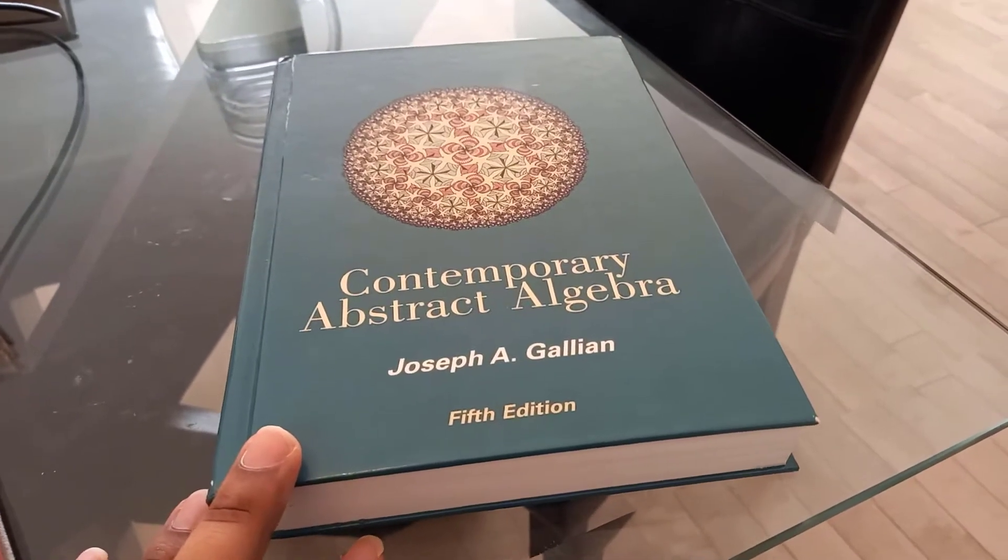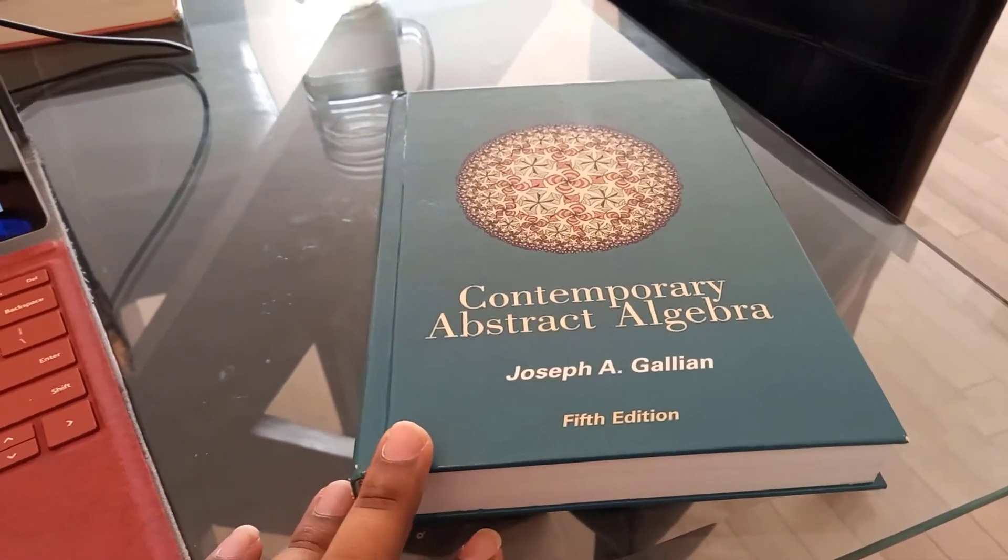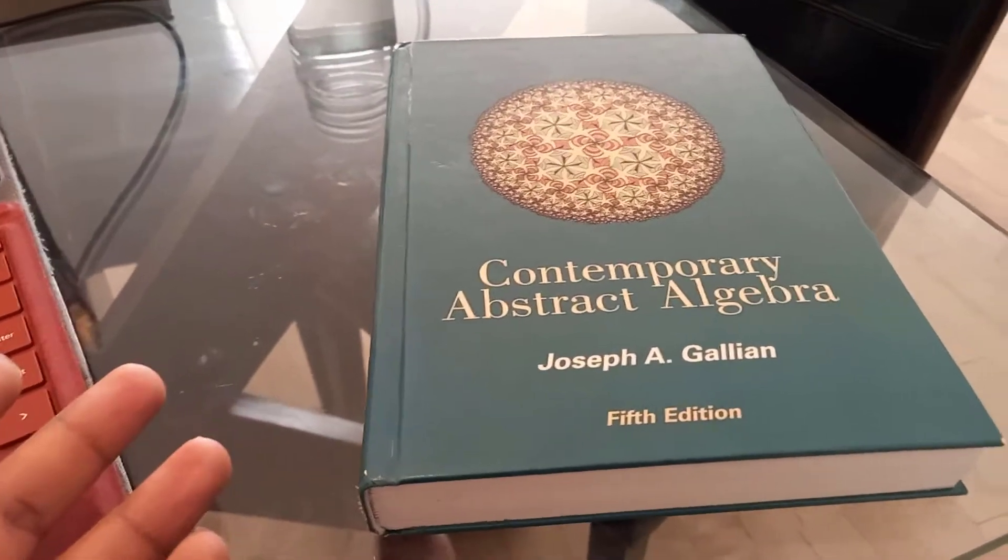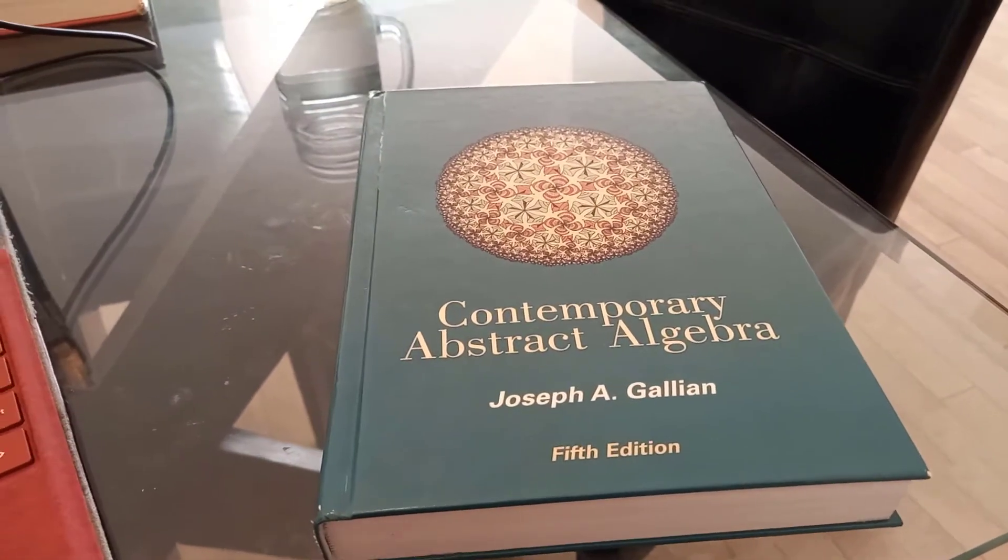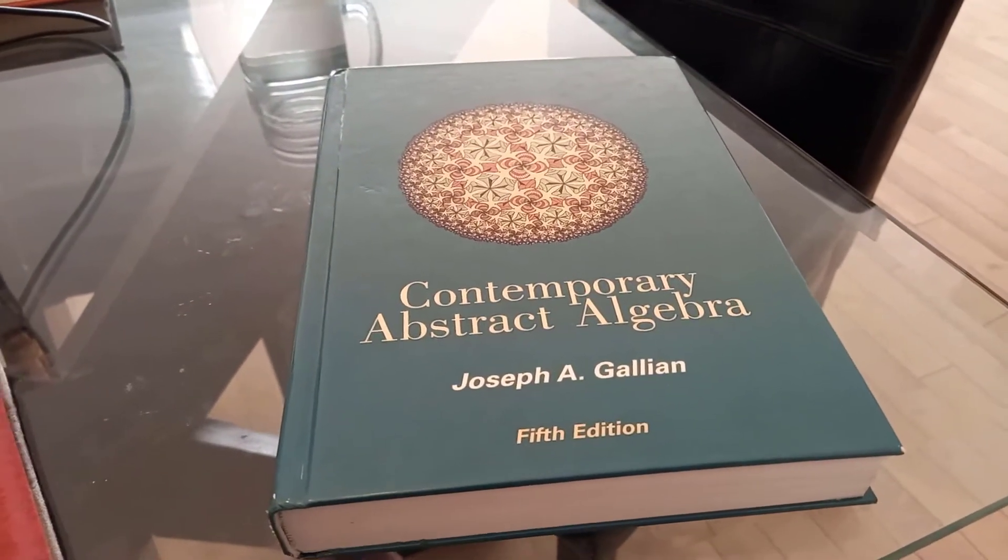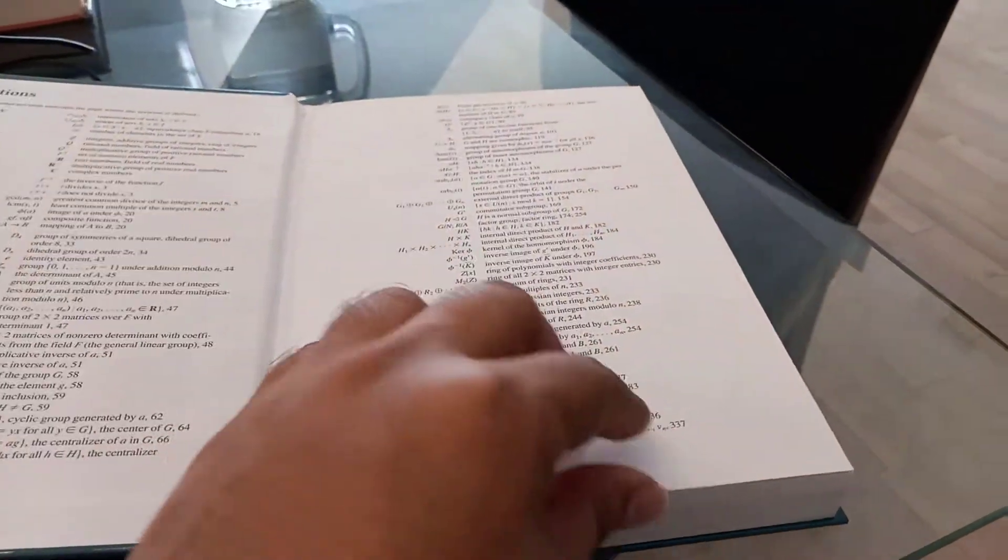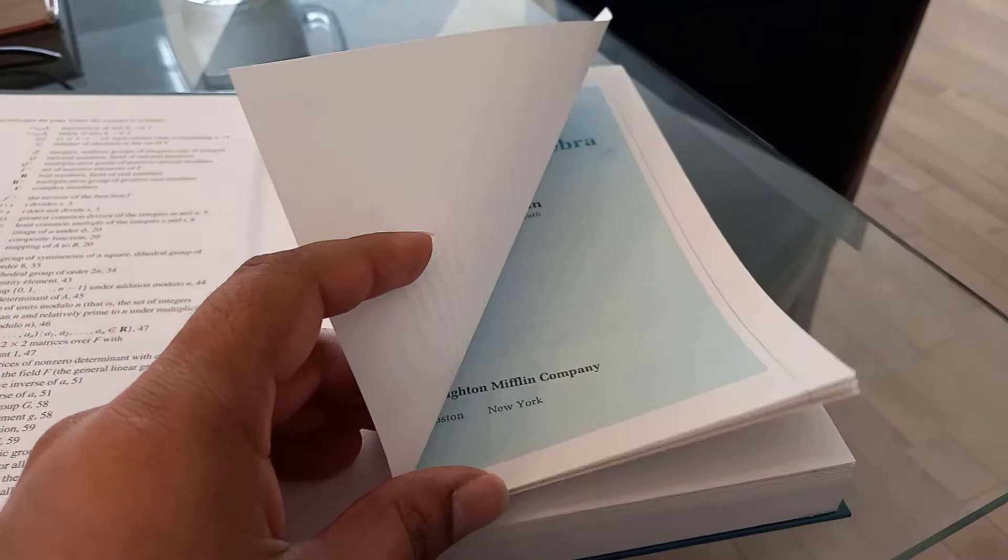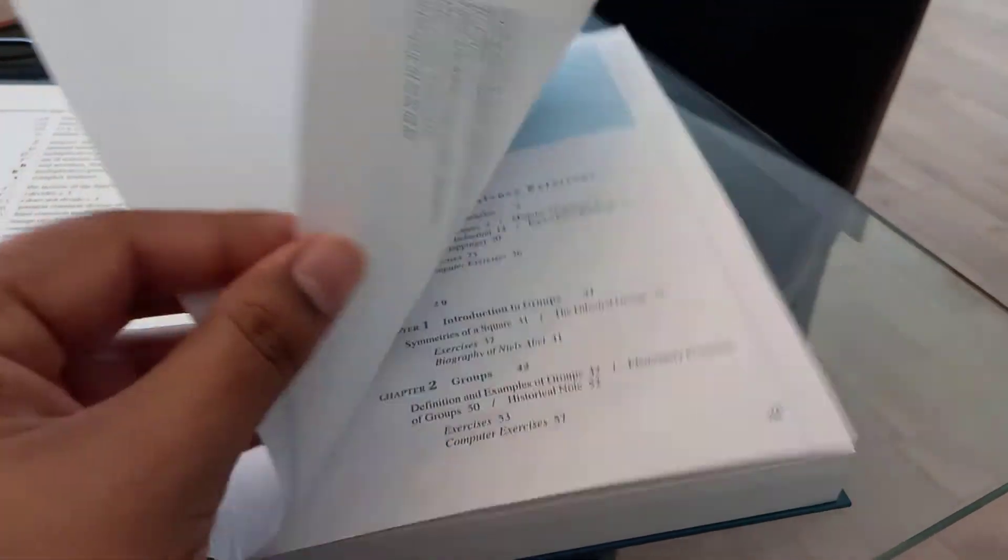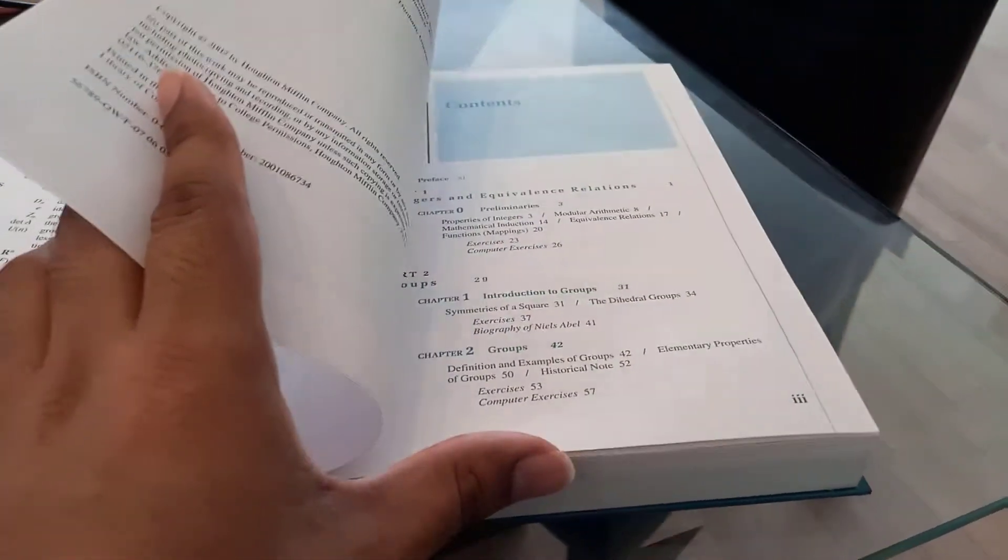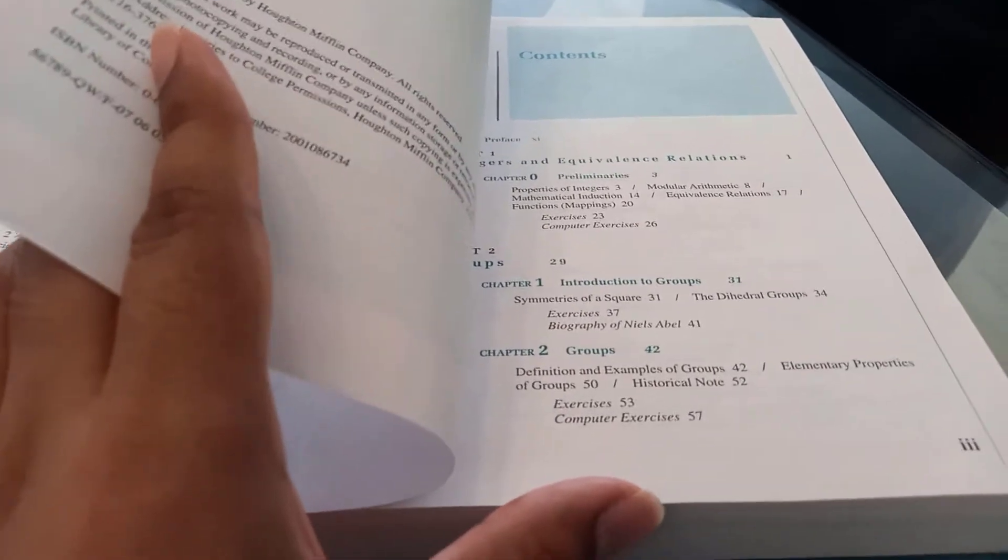Contemporary Abstract Algebra by Galleon, fifth edition. I just want to talk a little bit about how I study from textbooks like this one. Hopefully this would be helpful to other people who are trying to make this same journey. Usually your teachers would tell you to try to understand the definitions and do the exercises, and that is of course good advice. I just want to say something a little more specific.